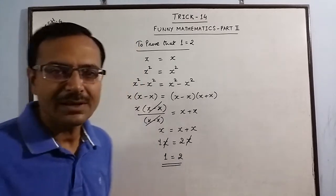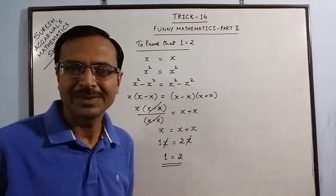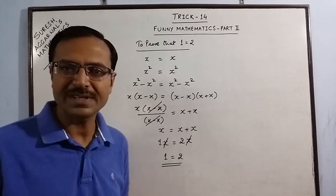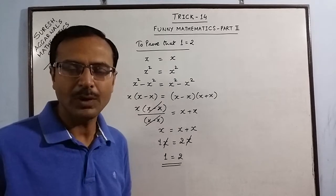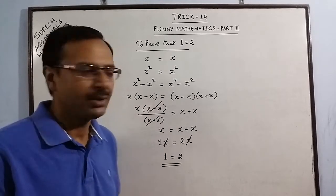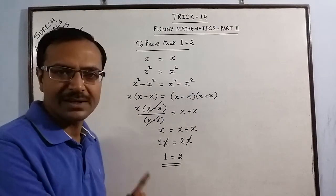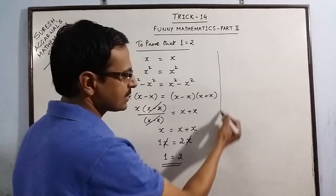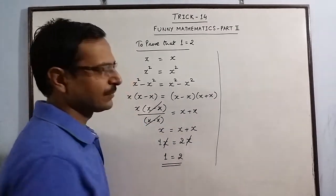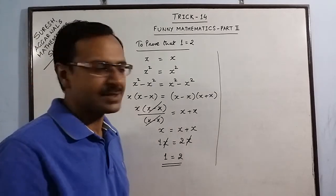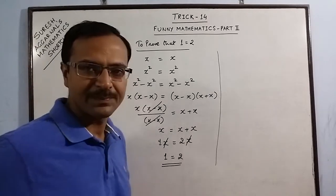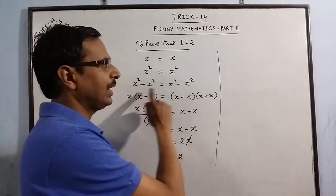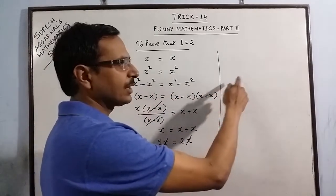This is a mathematical fallacy — there is some mistake in one of the steps, and you have to point out what that mistake is. Using the same process, we will try to prove something else. This time I will go with cubes.